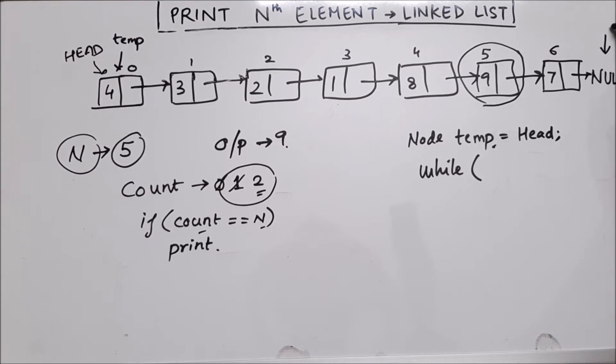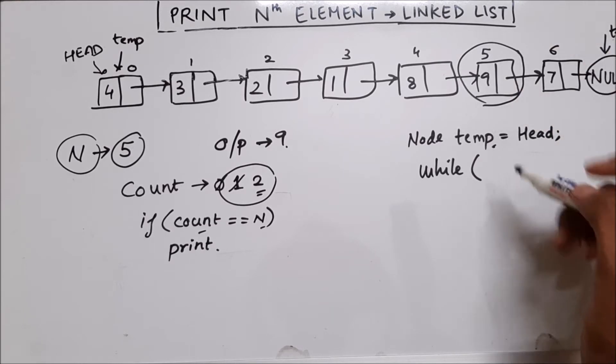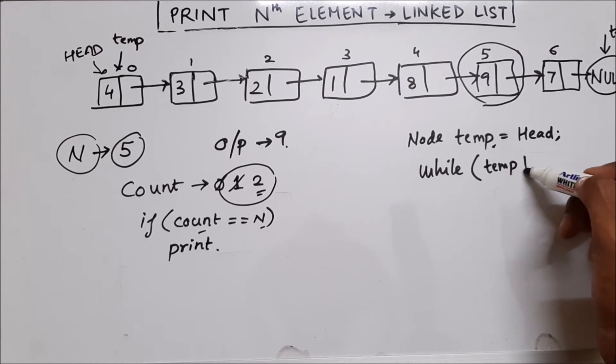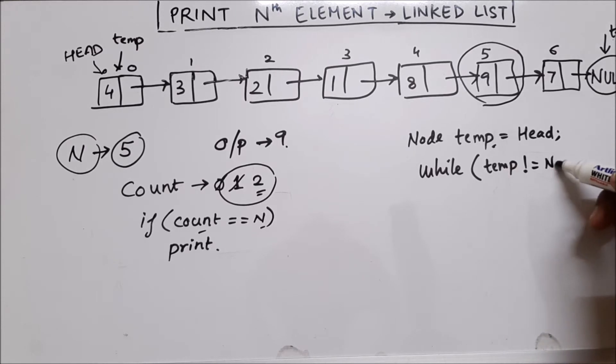When temp comes here, we will know that it is the end of the linked list because temp is pointing to null. So we will say when or while temp is not equal to null, we will traverse.